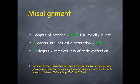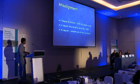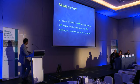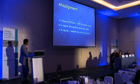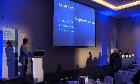A note of caution: just to give you the degree of misalignment you'll get - one degree of rotation will cause 3.5 percent of toricity to be lost from the intraocular lens. So if you are misaligned by 30 degrees, you almost completely lose the effect of a toric lens, and that lens just becomes like your standard monofocal lens. So it's very critical that you try to eliminate this degree of misalignment.